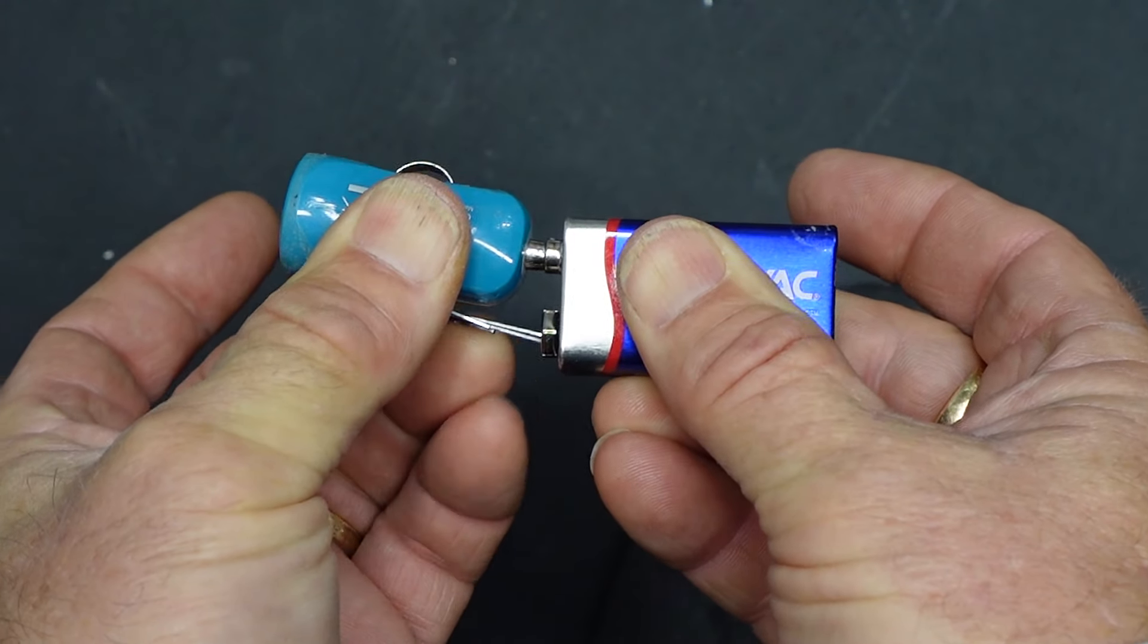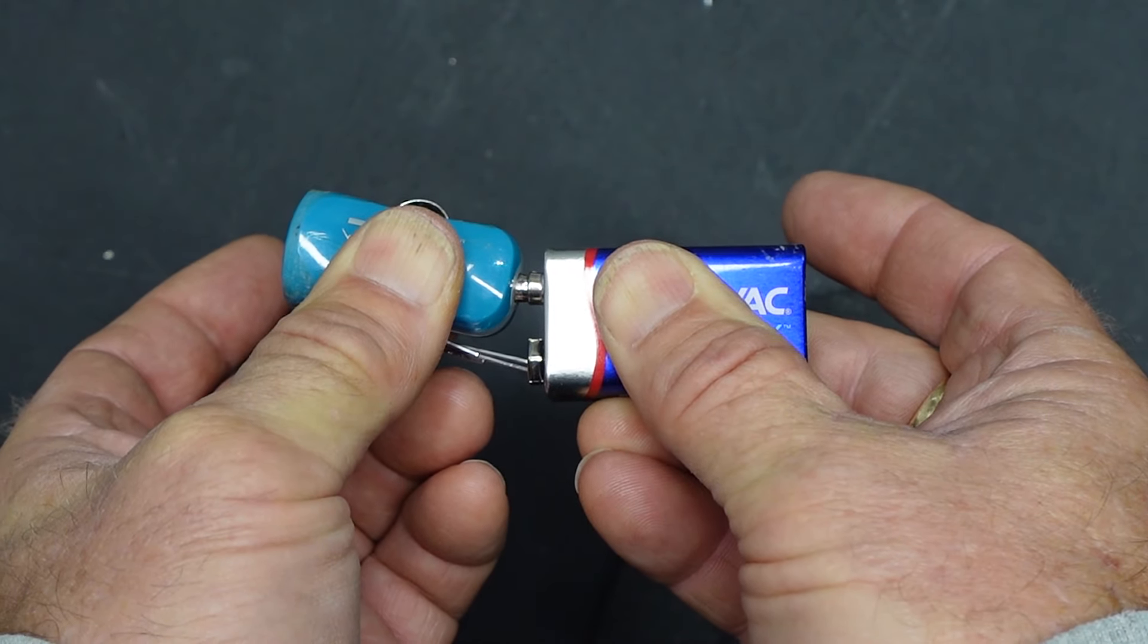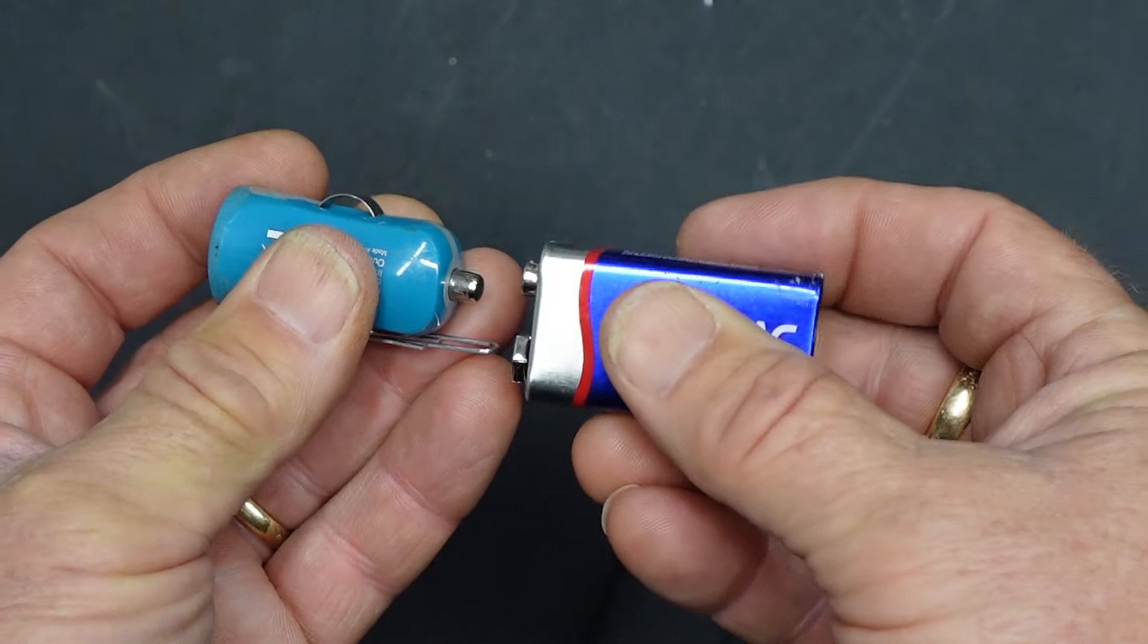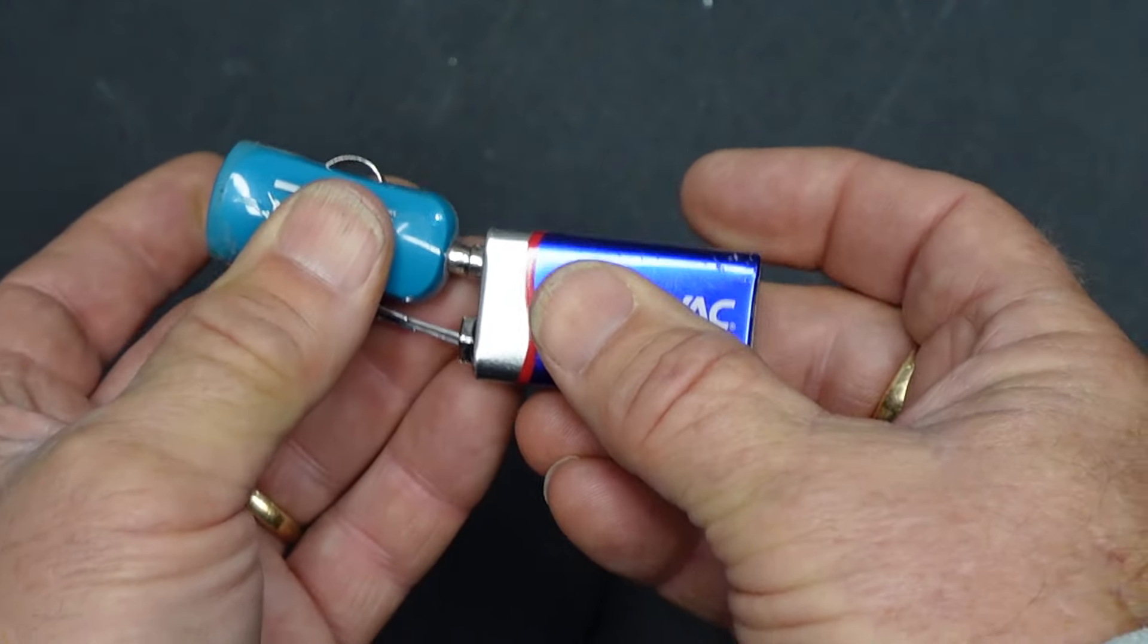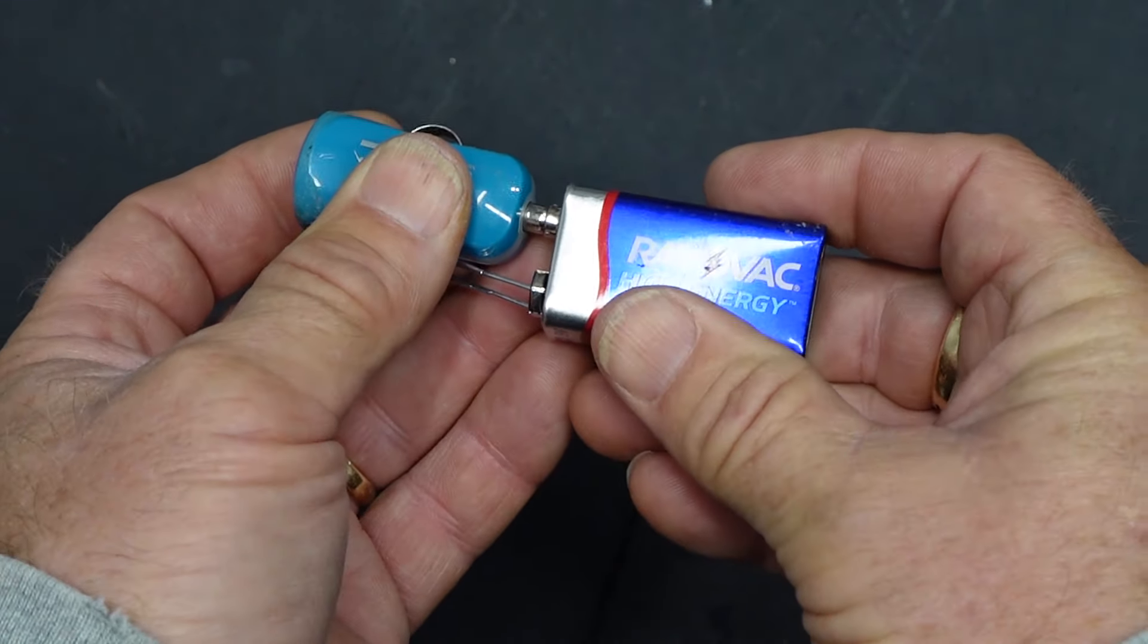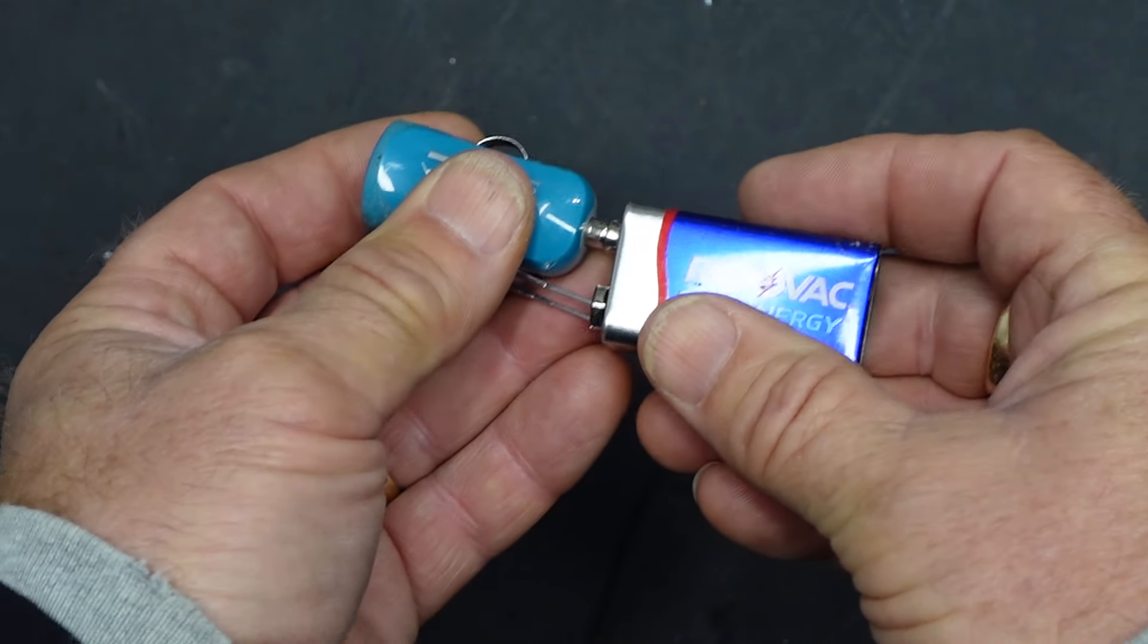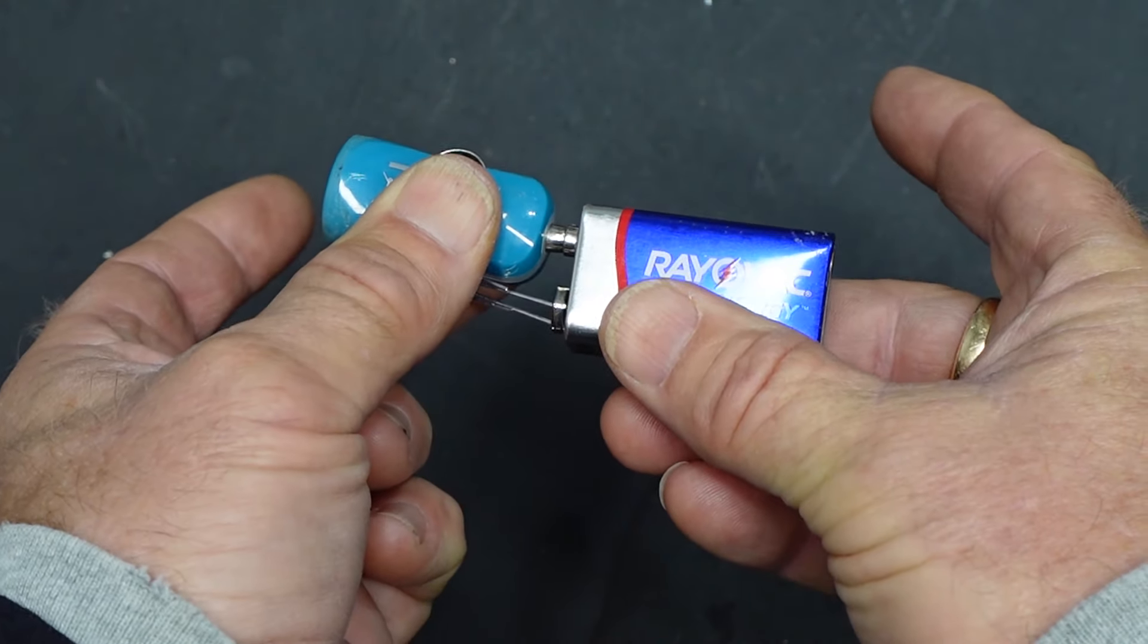Now if you want to make the hands-free version you can stand here and hold it and it'll charge your phone. Your phone takes only five volts so it makes sense that a nine volt battery is sufficient here. It just conditions the voltage down to five volts. If you want to make the hands-free version I'll show you how to do it with a roll of duct tape.